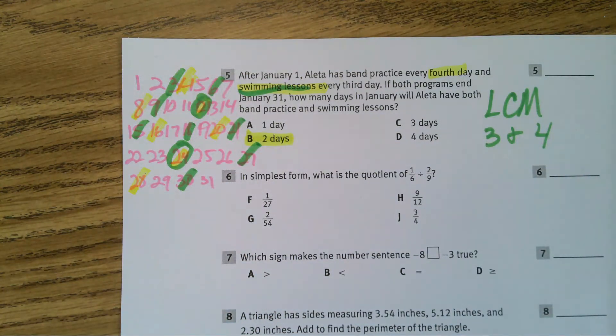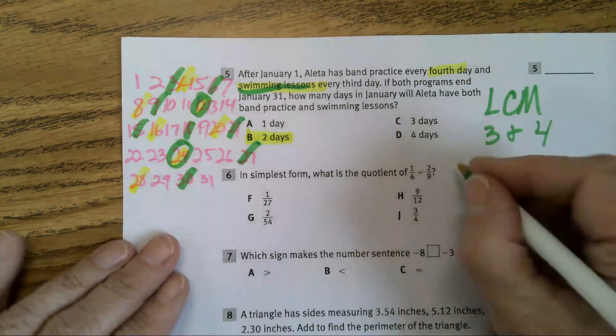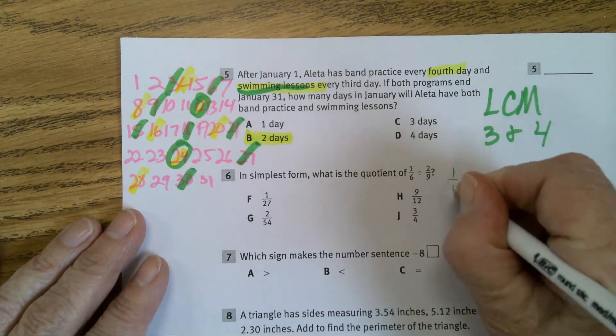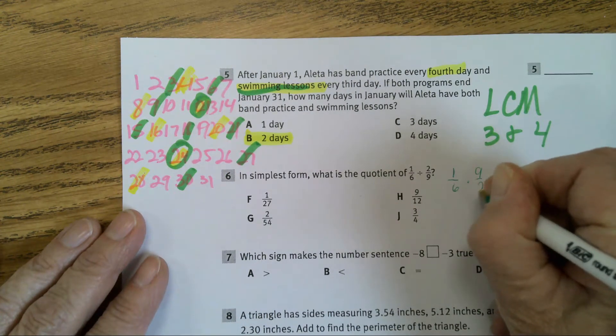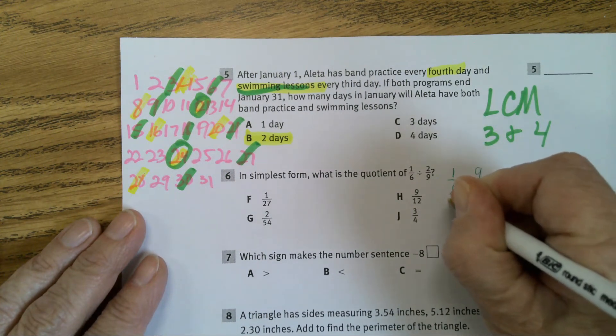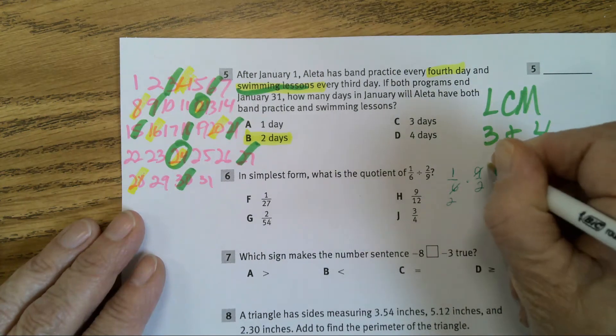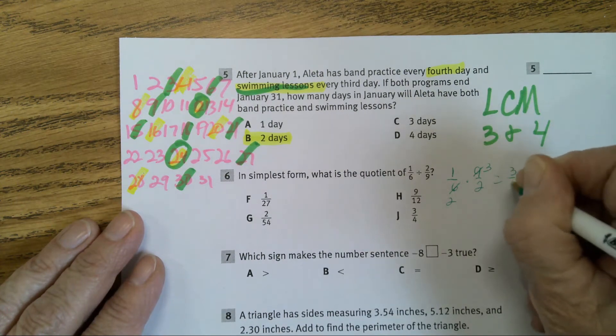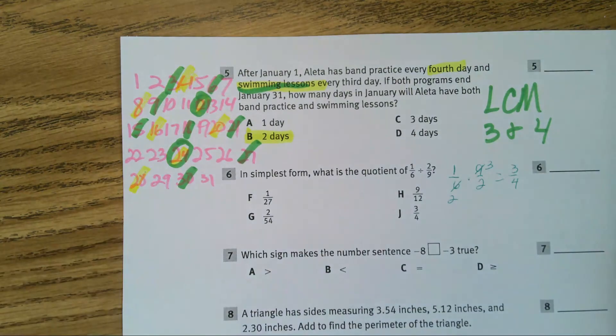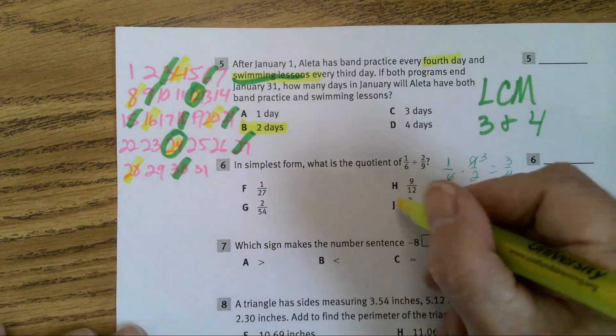In problem number 6, in simplest form, that's 1/6 times 9 halves. 3 divides 6 twice. 3 divides 9 three times. And the answer is 3 fourths. You should have J.